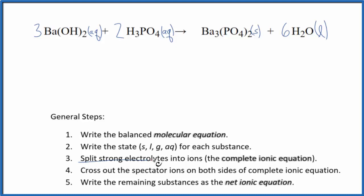Now we're going to split the strong electrolytes into their ions, and this will give us the complete ionic equation. So we look at barium hydroxide. Barium's in group 2 on the periodic table, 2 plus ionic charge. The whole hydroxide ion has a minus charge. So we have 3 barium 2 plus ions,